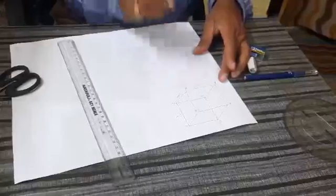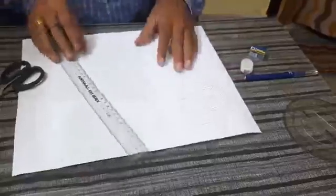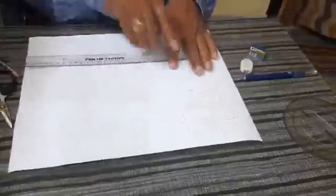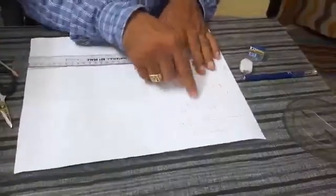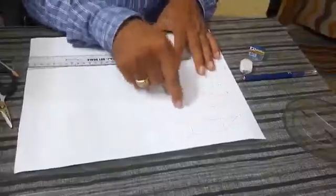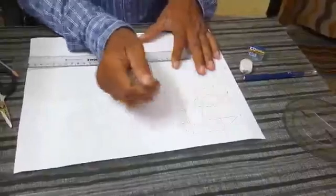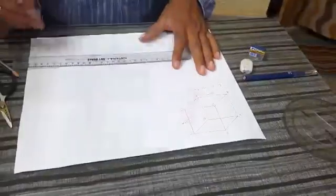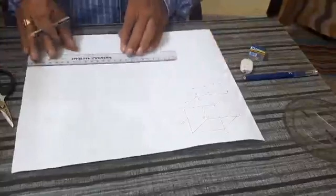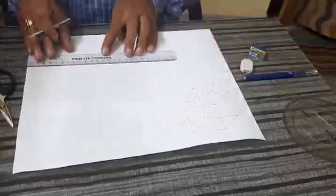Now how we'll make this one? The perimeter of the base is A to B, B to C, C to D, and D to A. That means ABCDA is 20 centimeter, so we'll draw a straight line of 20 centimeter.